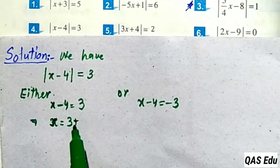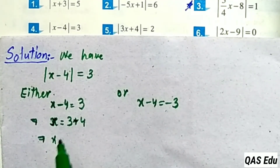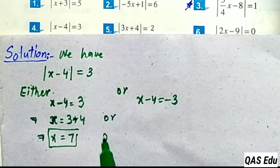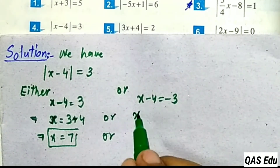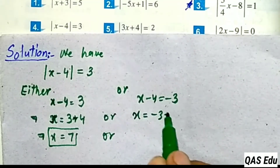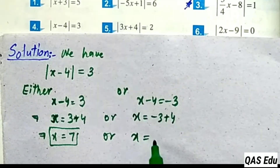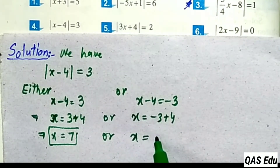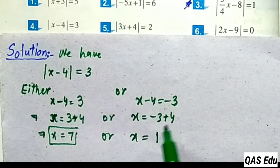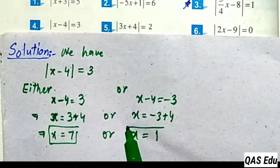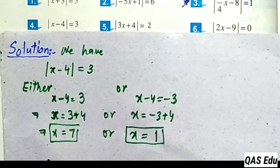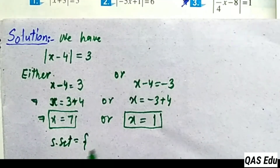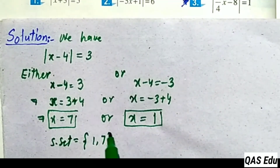Move minus 4 to the right as plus 4. So 3 plus 4 gives 7. For the other: minus 3 plus 4. Plus minus gives minus, but 4 minus 3 gives 1. Both are positive. The solution set is 1 and 7.